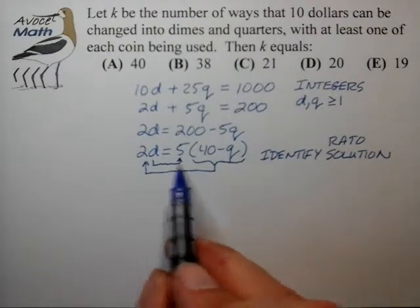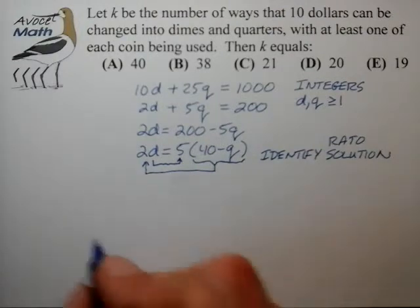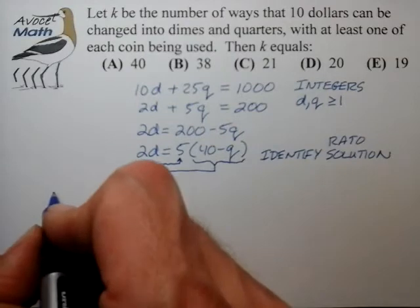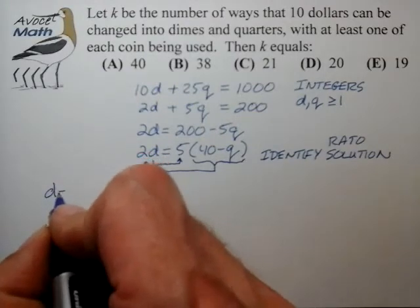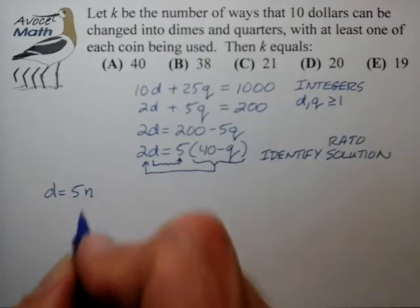Once you've identified how these factors can match up, we can write down what the ratio solution will look like. It looks like the variable d can be written as some multiple of 5, which is 5n.